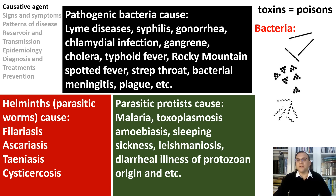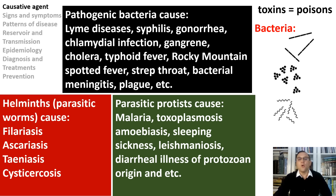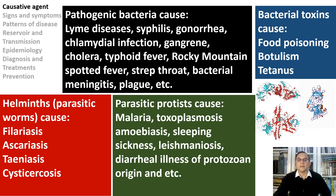Bacterial infections are any illness or condition caused by bacterial growth or toxins — poisons. You can get sick from harmful bacteria entering your skin, gastrointestinal tract, lungs, heart, brain, blood, or anywhere else. Bacterial toxins damage the host at the site of bacterial infection or at a distance from the site of infection. Bacterial toxins can be single proteins or organized as oligomeric protein complexes.